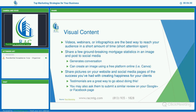Visual content: videos, webinars, or infographics are the best way to reach your audience in a short amount of time. Keep in mind your audience has a short attention span, so these work really well. Share groundbreaking mortgage statistics in an image and post that to social media — it will generate conversation. You can create an image using a free platform like Canva. Share pictures on your website and social media of successes you've had with clients. Testimonials are a great way to do this, and you may ask clients to submit a review on your Google Plus or Facebook page.